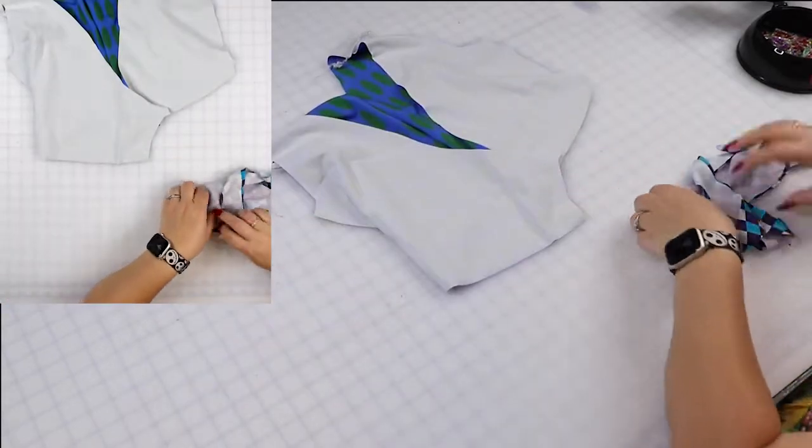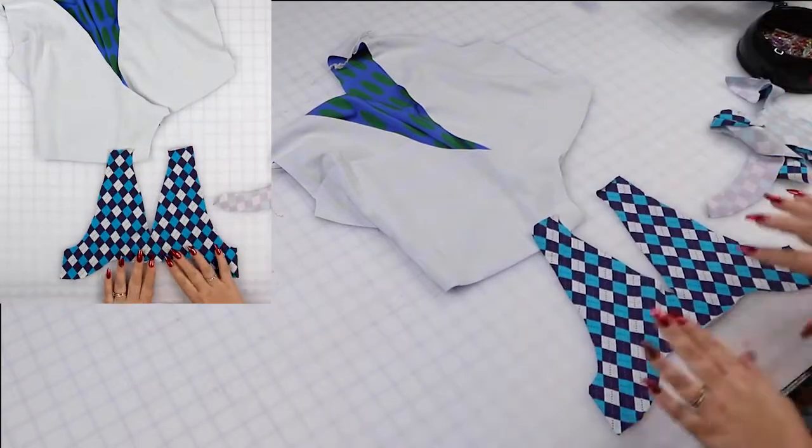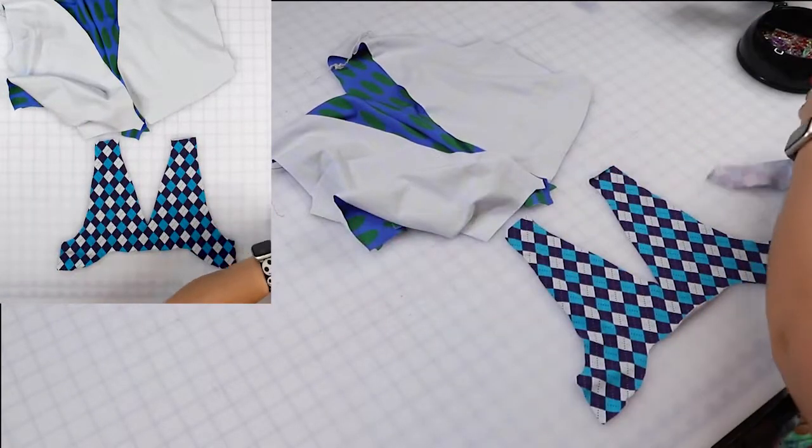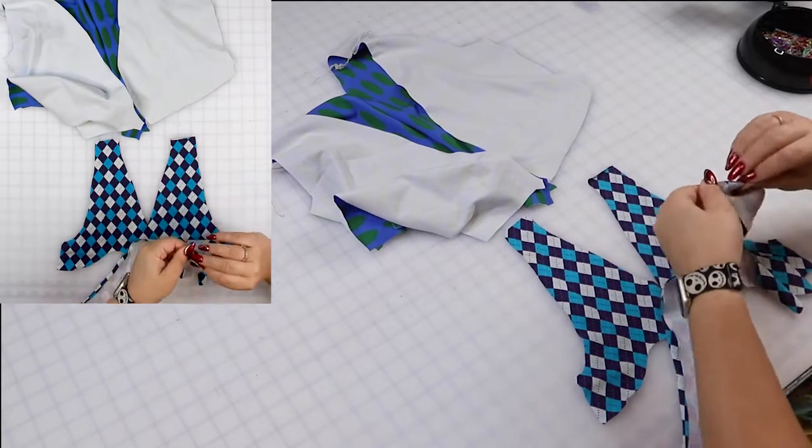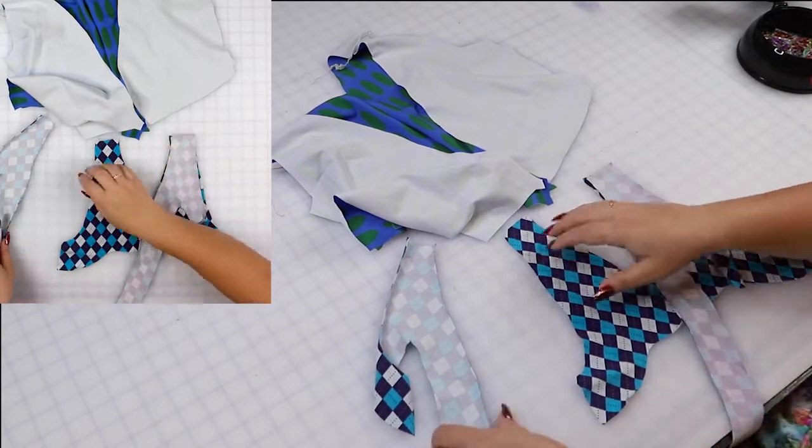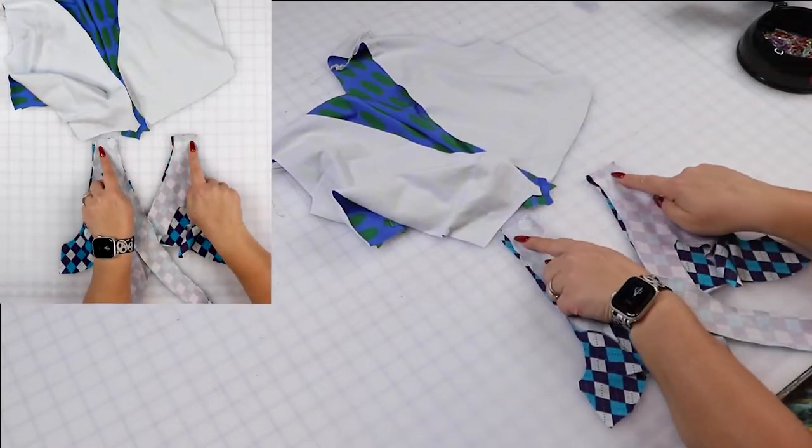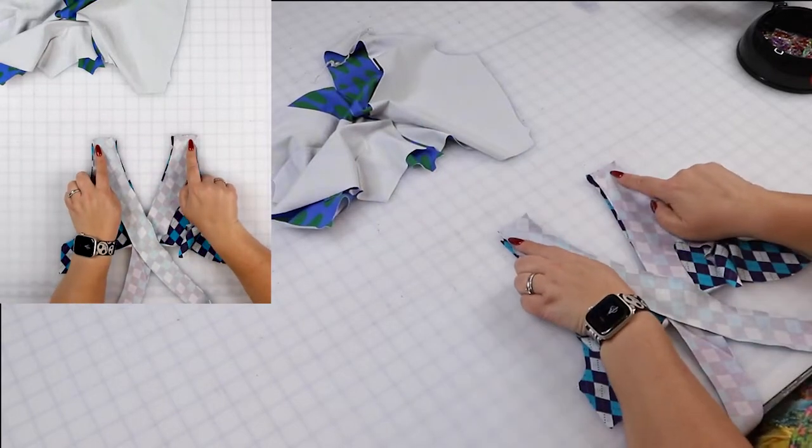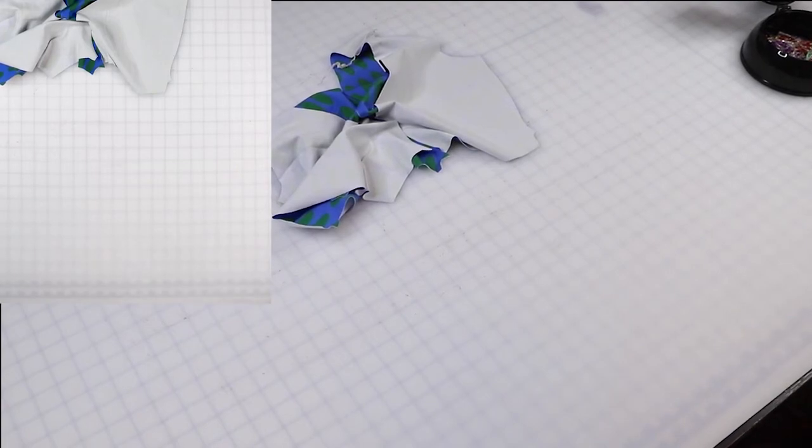Now let's go ahead and sew the facing. The back facing was cut on fold, so this is what it looks like. Then you have your two mirror images for the facing that have the shoulder seam. So we're going to do the same thing as we did for the main, align at the shoulder seam like so and stitch along the shoulder seam with a half an inch seam allowance.